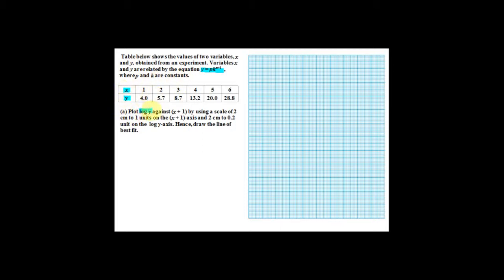Plot log y against x plus 1 by using a scale of 2 cm to 1 unit on the x plus 1 axis, that is the horizontal axis, and 2 cm to 0.2 units on the log y axis, that is the vertical axis. Hence draw the line of best fit.